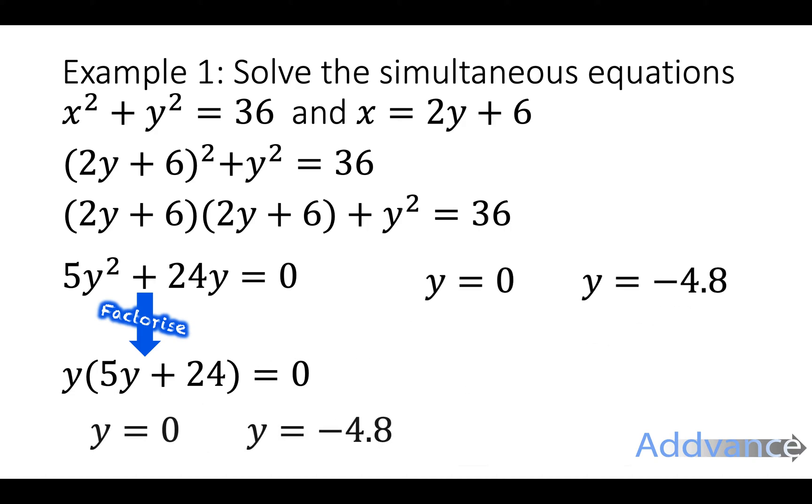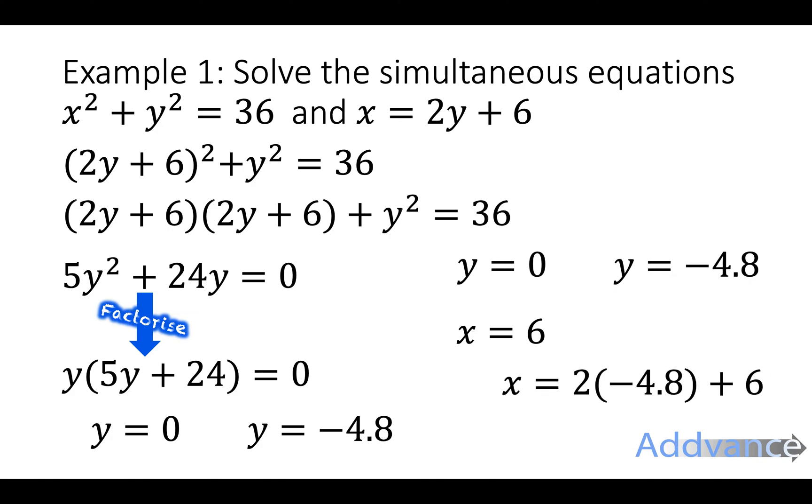Now we take the y values over and now we're going to find the x values. To find the x values we're going to use our equation for x. x equals 2y plus 6. So we slip our y values into that equation. 2 times 0 plus 6 is 6. And then we do the same over here. x equals 2y plus 6. y is minus 4.8. And we type that into our calculator. And we get x is minus 3.6.